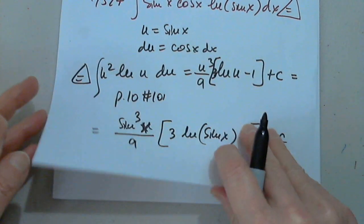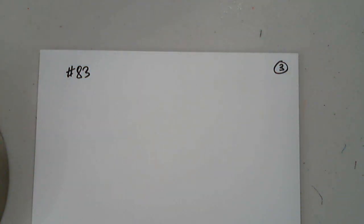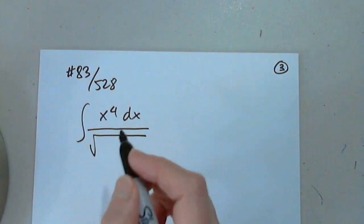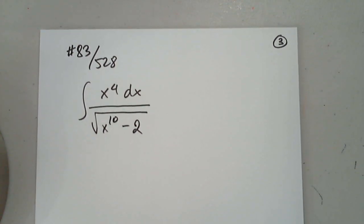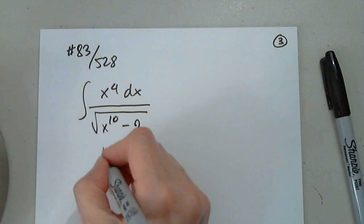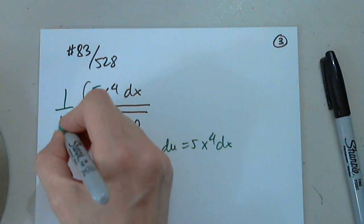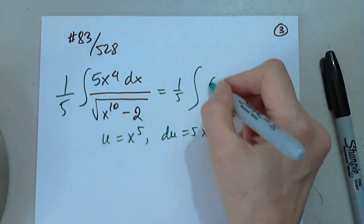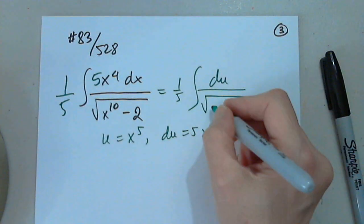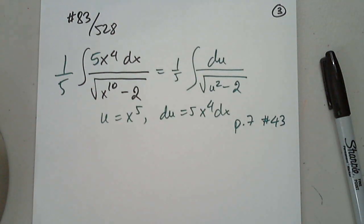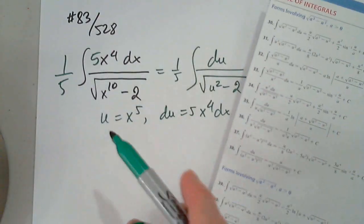Let's look at one more — number 83 on page 528. The integral is x⁴ dx over √(x¹⁰ − 2). It requires a substitution. Let u = x⁵, so du = 5x⁴ dx. We get (1/5) times the integral of du over √(u² − 2). On page 7, formula number 43 gives: du over √(u² − a²).